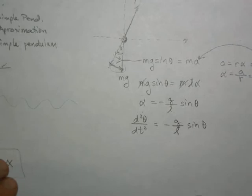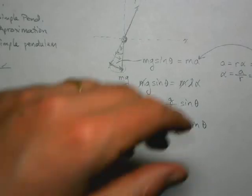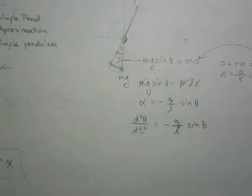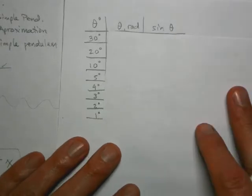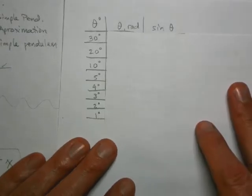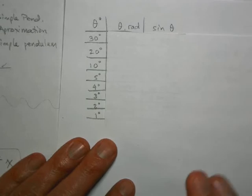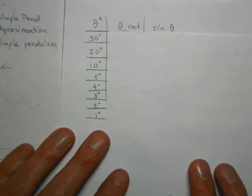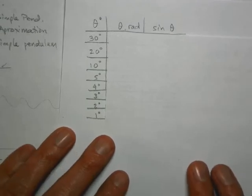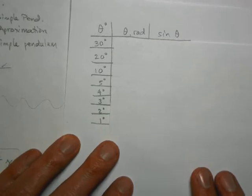Does this look like simple harmonic motion? Not quite. Over here we had the second derivative equal to the original function times negative omega squared. Here we have the second derivative equal to a negative constant times sine(theta) — not theta itself — and this is a problem. But we're going to use a very cool thing called the small angle approximation.